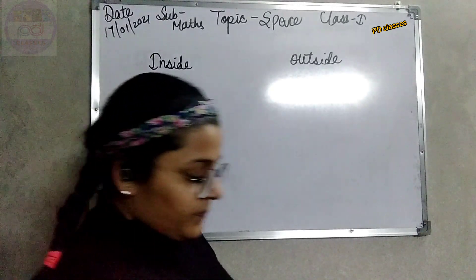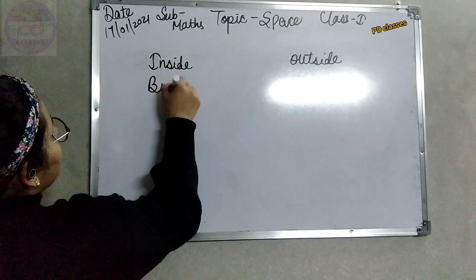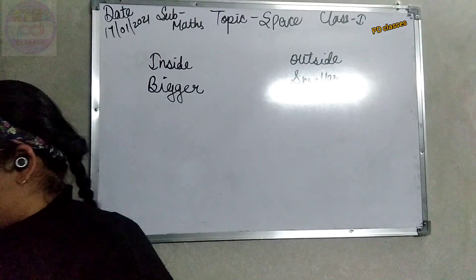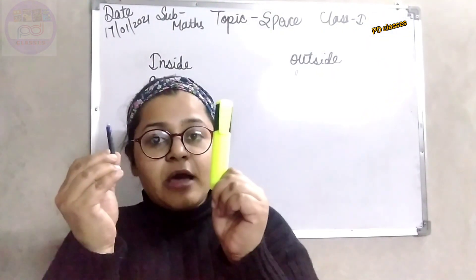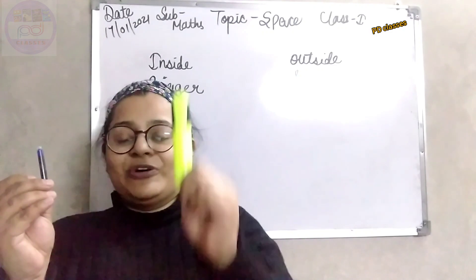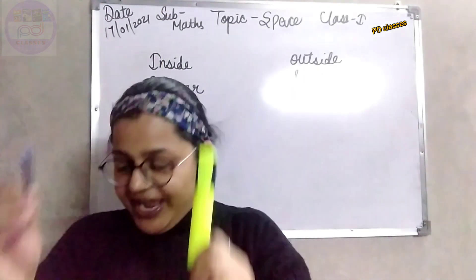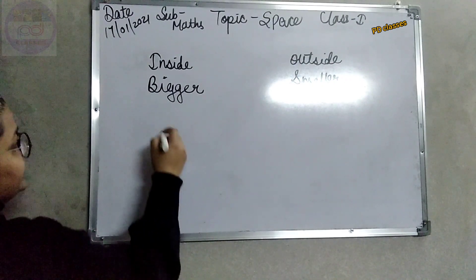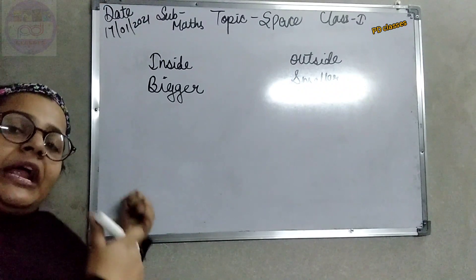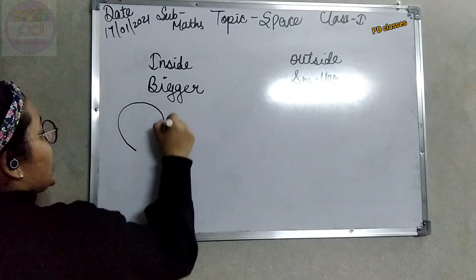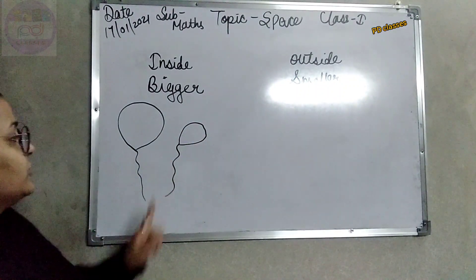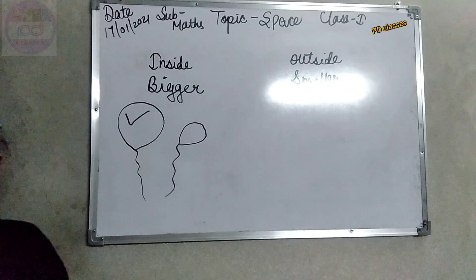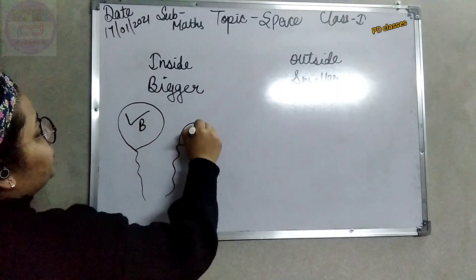So what did we learn, students? We learn bigger and smaller. Now, if I ask you about the refill and the marker — which is the bigger one and which is the smaller one? This is the bigger one and this is the smaller one. Very good. Now if I make two or three shapes in front of you, can you tell me which is the bigger one and which is the smaller one? You will give me the answer and I will mark the tick. If I have these two balloons, which is the bigger one and which is the smaller one? This is the bigger one and this is the smaller one. We will write B for bigger and S for smaller.